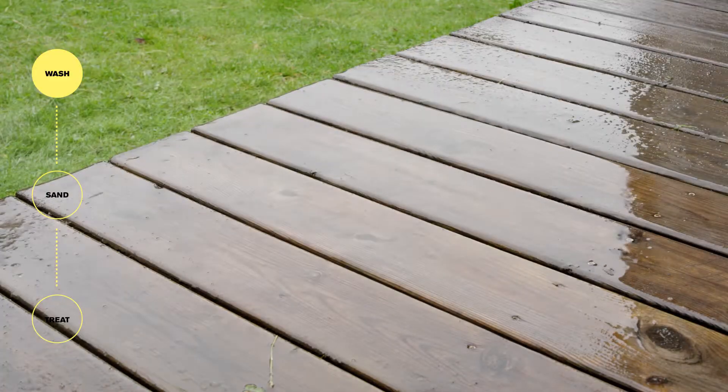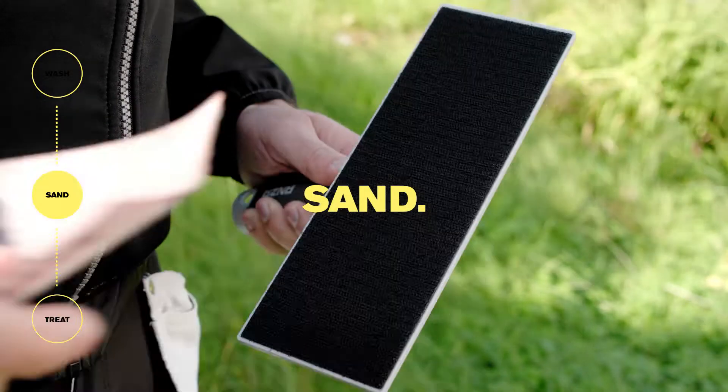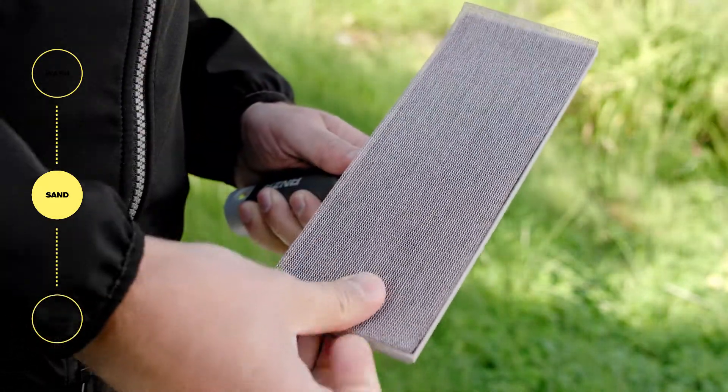Rinse with water and let the wood dry thoroughly. It's now time to sand. Attach the sanding paper onto the sanding tool.